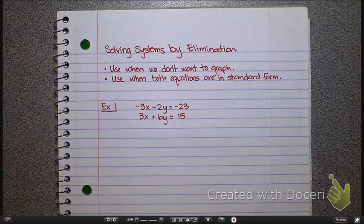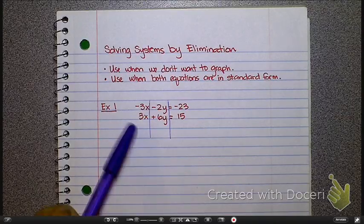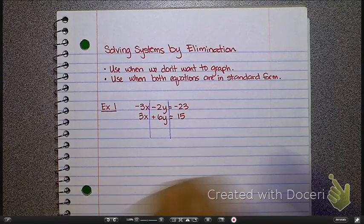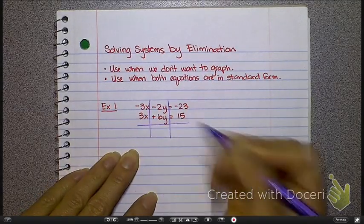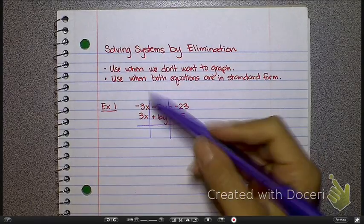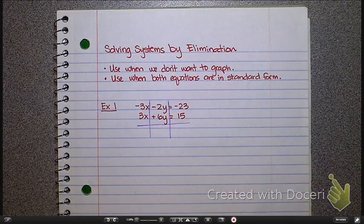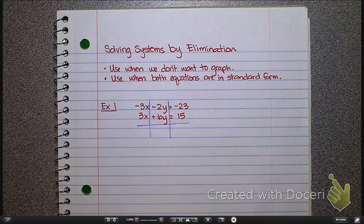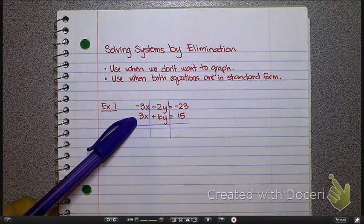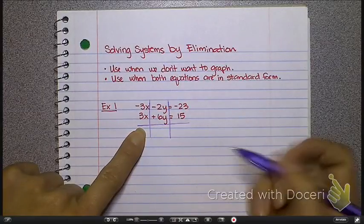In elimination, what we do is we divide the equations into columns. A column for my x's, a column for my y's, and a column for my regular numbers. Then what I do within those columns is I add the two equations together. So I add together what I have in this column, I add together what I have here, and I add together what I have here. Now when I say add, you still have to use your integer rules, because what's negative 3 plus 3? Zero. So you still have to think about what your integer rules are. So this is zero, so I'm not going to write anything here.